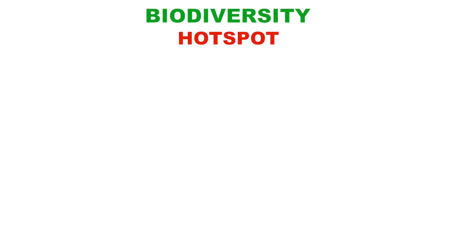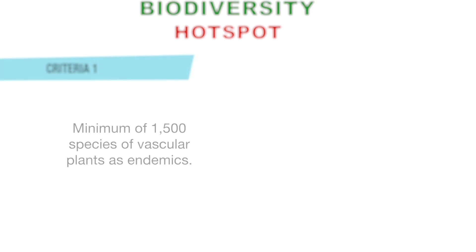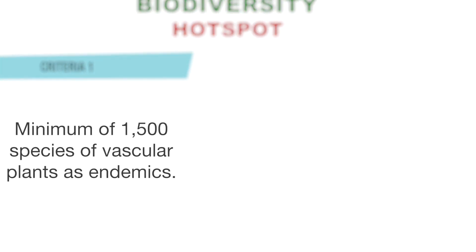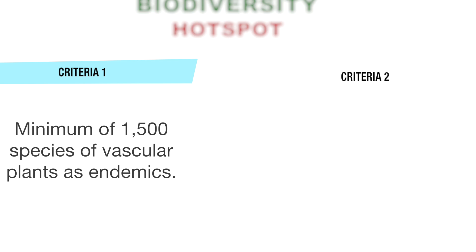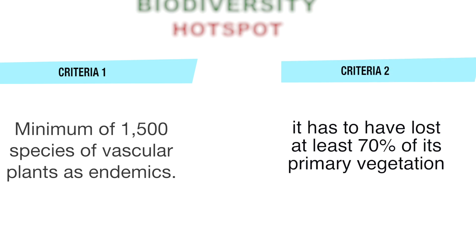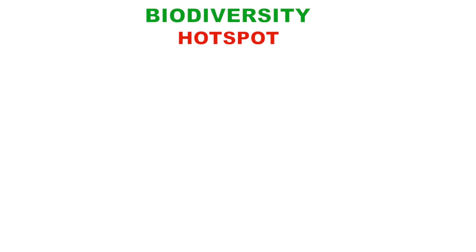To qualify as a biodiversity hotspot on Myers' 2000 edition of the hotspot map, a region must meet two strict criteria. First, it must contain at least 1,500 species of vascular plants as endemics, which is 0.5 percent of all vascular plants as endemics. Second, it has to have lost at least 70 percent of its primary vegetation. The reason for the 1,500 vascular plant threshold is that plants are the primary producers — the autotrophs — upon which all other organisms depend, and ecosystem strength is measured by its primary productivity.